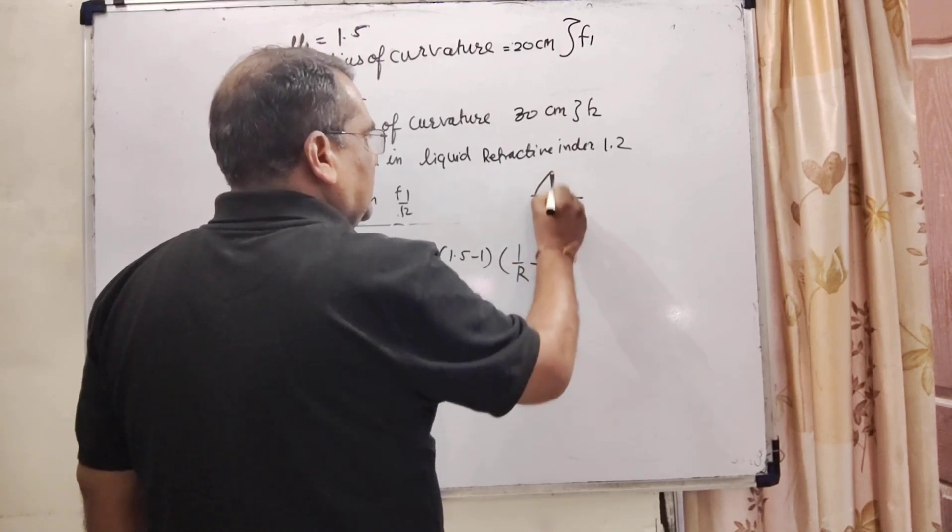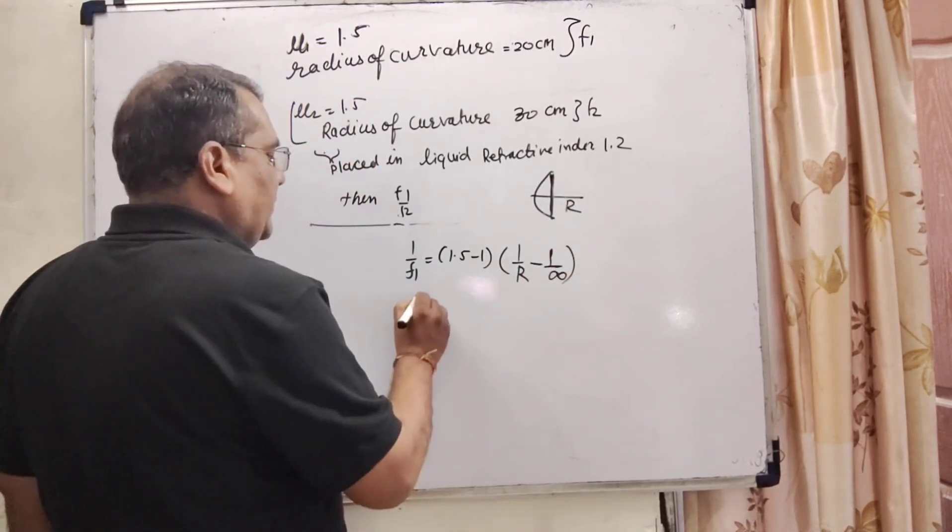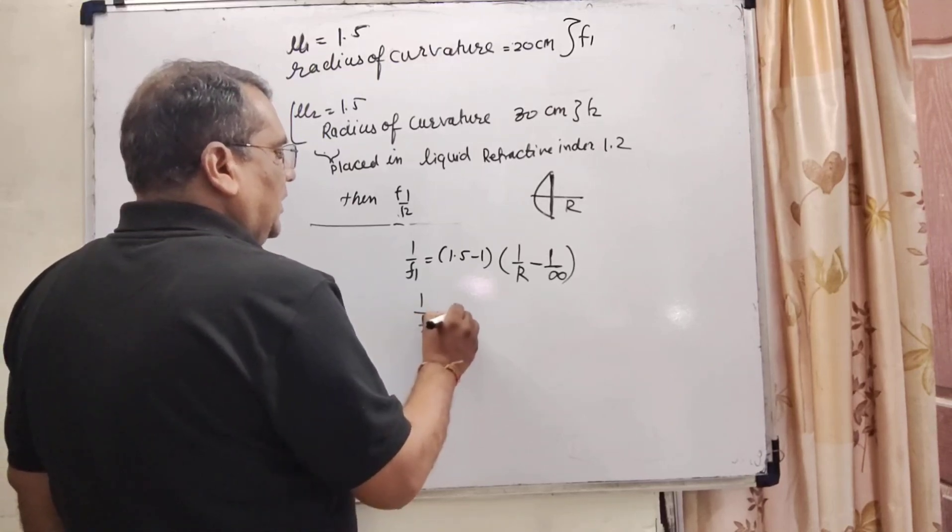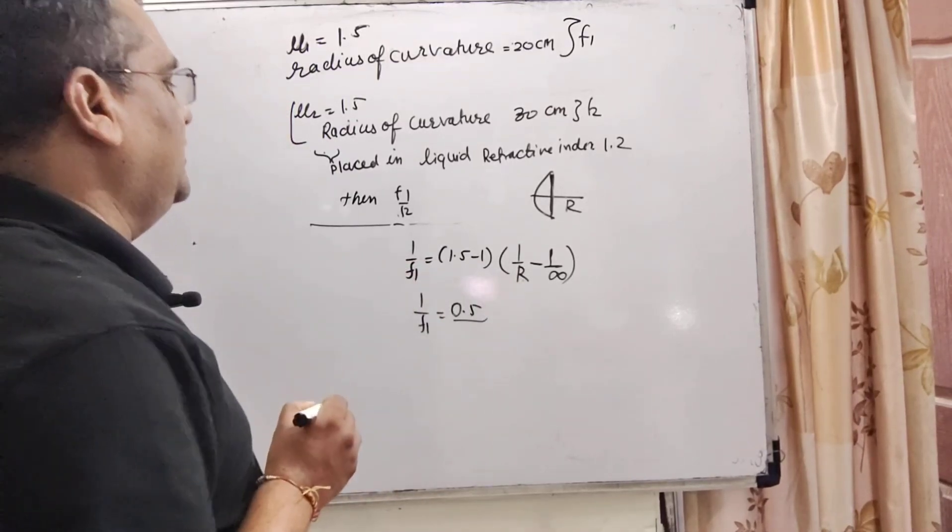This is r1 by r positive minus plane surface for radius of curvature. That is radius of curvature is infinity. 1 by f1 equals 0.5 and radius of curvature of first lens that is given 20.